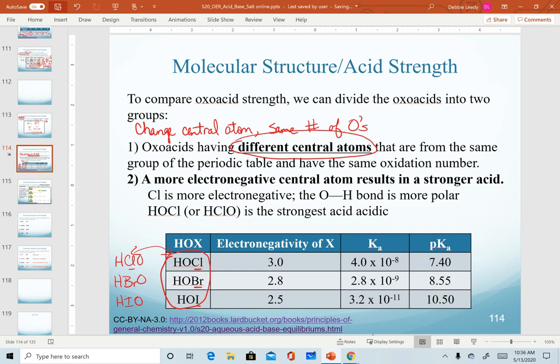For this trend, we are looking at the electronegativity of the central atom. As we get a more electronegative central atom, we will get a stronger acid. If we think about our structure here, hydrogen is bonded to the oxygen.